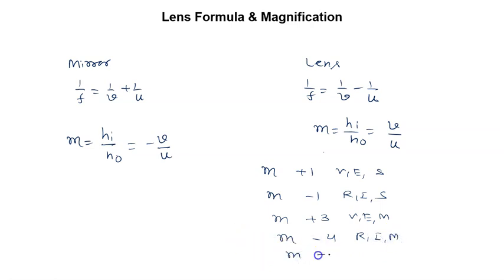If m is given by minus 0.2, minus means real, inverted, 0.2 is less than 1, so it is diminished. If m equals plus 0.4, plus means virtual, erect, 0.4 is less than 1, so it is diminished.